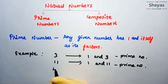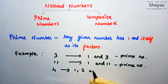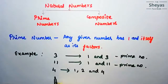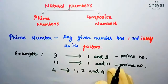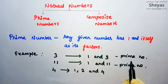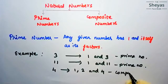Let us take 4. The factors of 4 are 1, 2, and 4 — we can write 2 times 2 as 4, so 2 is a factor of 4. For 3 and 11, other than the number itself we cannot get any other factors — that is why we call them prime numbers. But for 4, it has more than 2 factors, so all such numbers are called composite numbers.